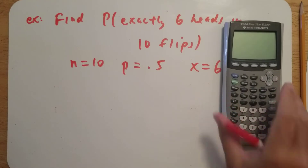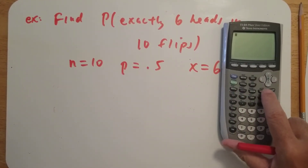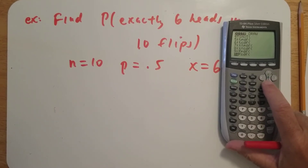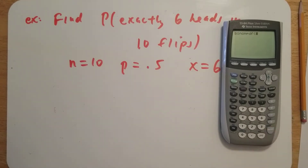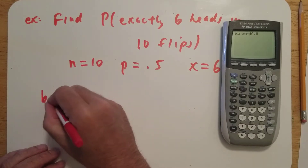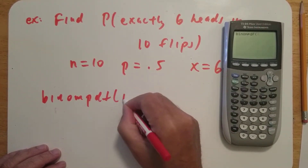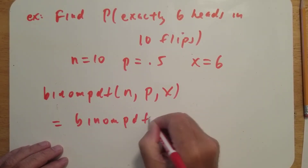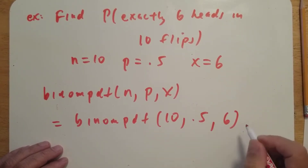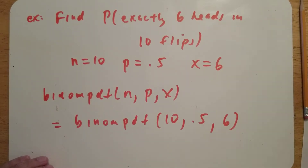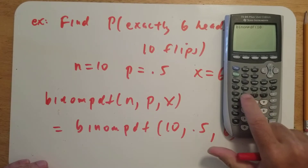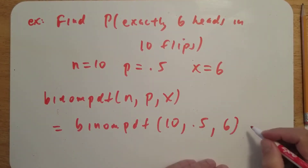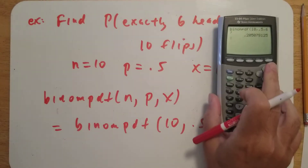Let me show you where that is on the calculator. Go to the calculator, press second above VARS to get to DISTR, then arrow down to find binompdf. The syntax is binompdf(n, p, x). For this example, enter binompdf with n=10, p=0.5, x=6. This gives the probability of getting exactly six heads in 10 flips — about 0.205 to three decimal places, about a 20% chance.